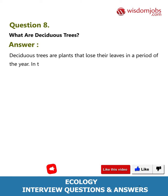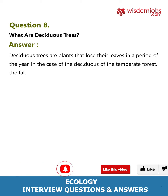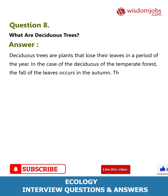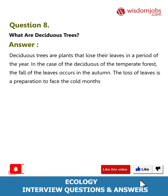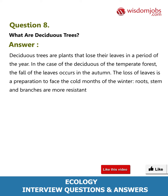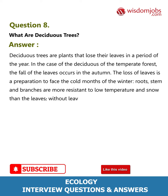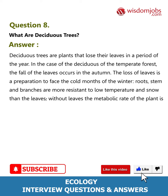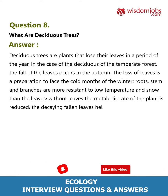Question 8: What are deciduous trees? Deciduous trees are plants that lose their leaves in a period of the year. In the case of the deciduous of the temperate forest, the fall of the leaves occurs in autumn. The loss of leaves is a preparation to face the cold months of winter; roots, stem, and branches are more resistant to low temperature and snow than leaves. Without leaves, the metabolic rate of the plant is reduced, and the decaying fallen leaves help to nourish the soil.